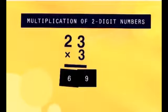Now we multiply the tens place. 2 tens multiply by 3 equals 6 tens. We write 6 in the tens column, and the answer is 69.